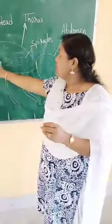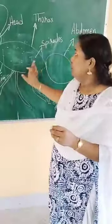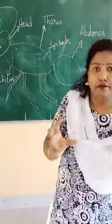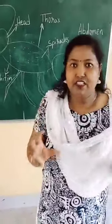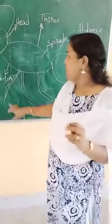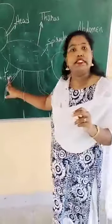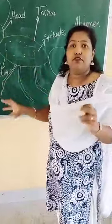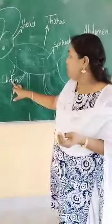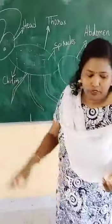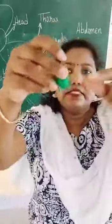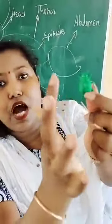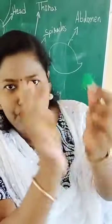This thorax is covered with a hard skin. This hard skin is called chitin. This body is covered with a hard skin which is called chitin. If you look at these insects, the body is covered with a hard skin which is called chitin.